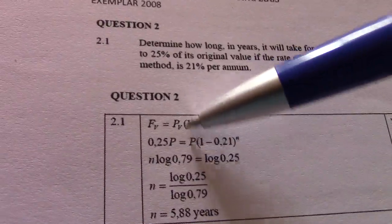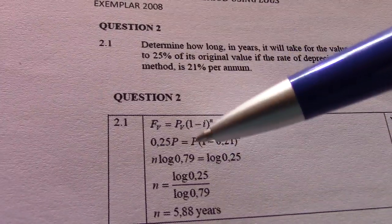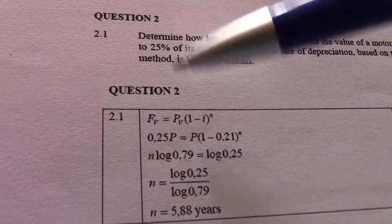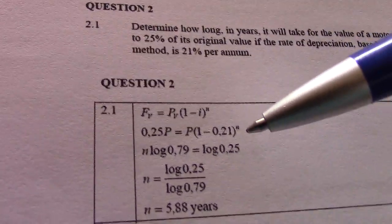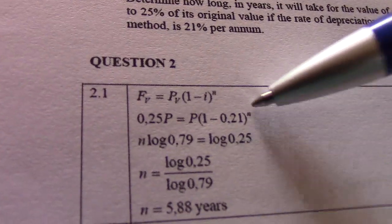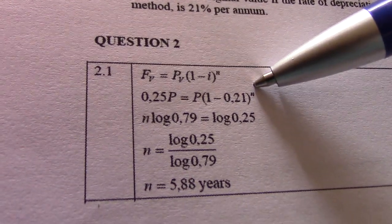So if the car is worth 1 rand now, 25% of 1 rand would be 0.25p or 1 times 25 over 100. Reducing balance method, 21% per annum, 0.21 to the power n.